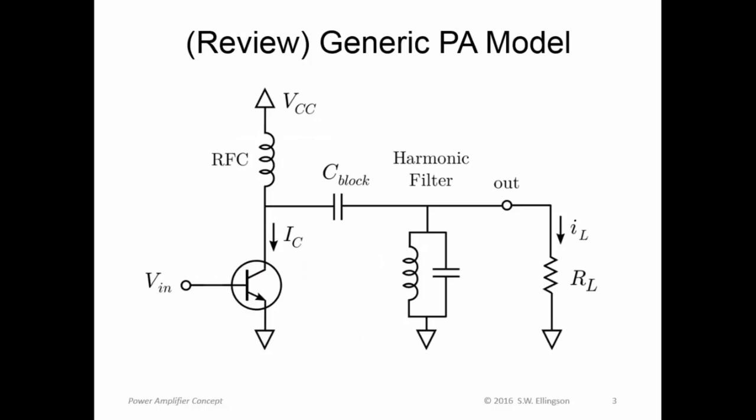So here, just to remind you, is our generic power amplifier model. In this case, shown as a bipolar transistor. But again, it could just as easily be a FET transistor, and would change hardly anything about this design or the analysis we're going to do here. An RF choke, which connects the collector directly to the supply. A blocking capacitor, which again isolates the DC from the output. And you could think of this as a bias T, of course.